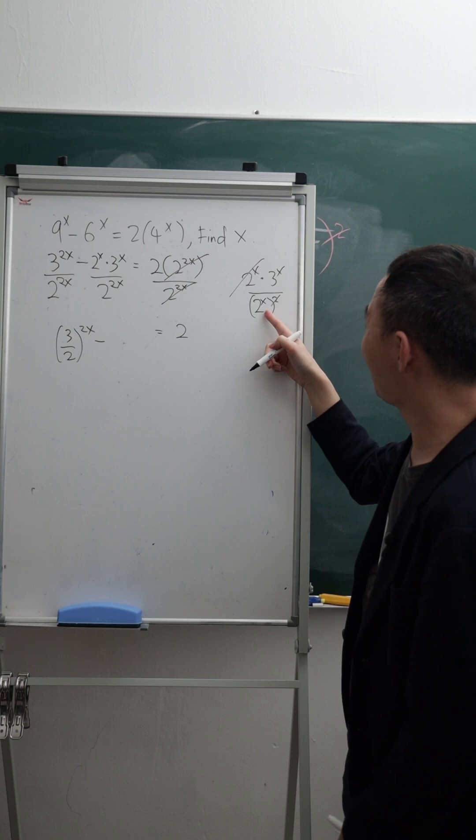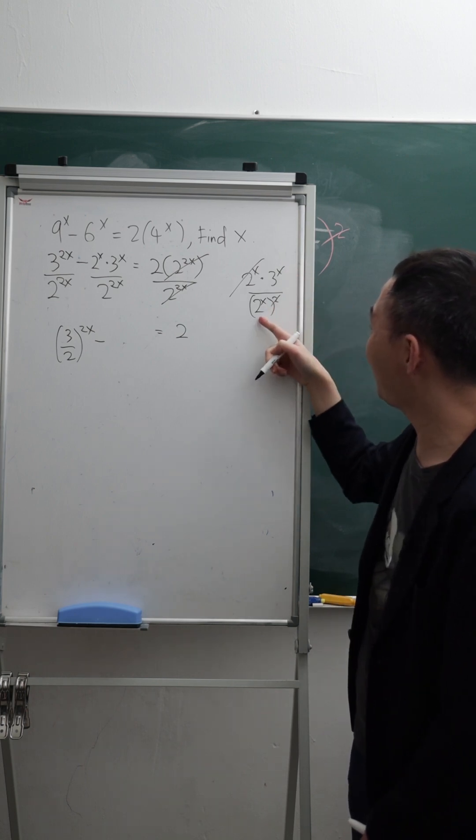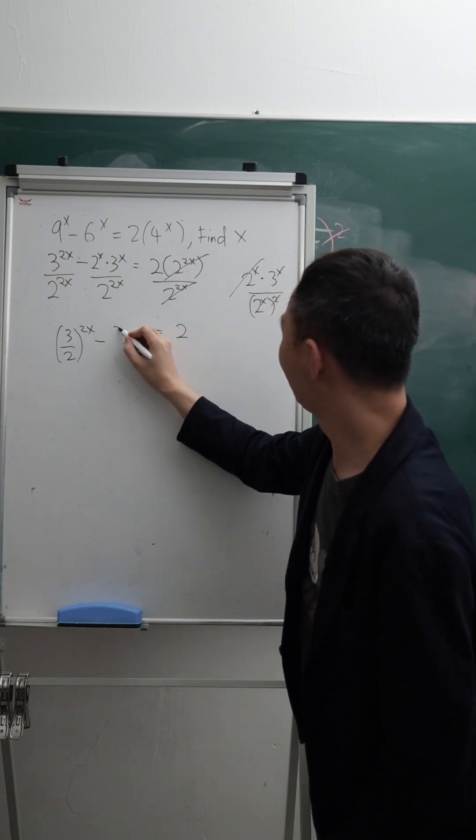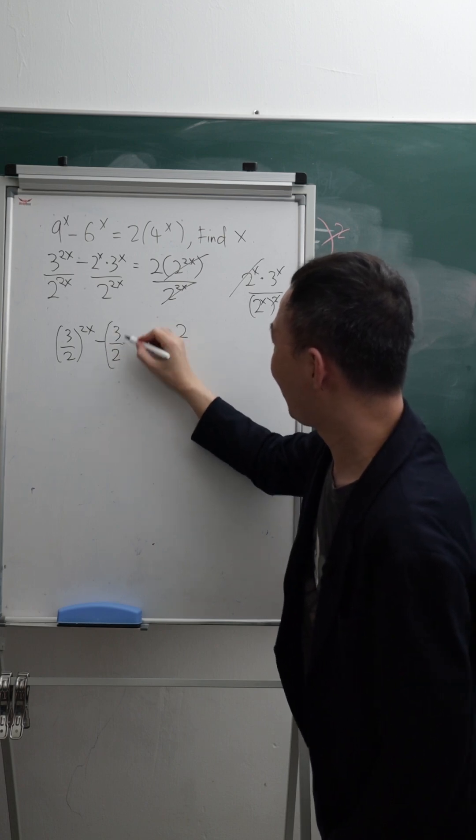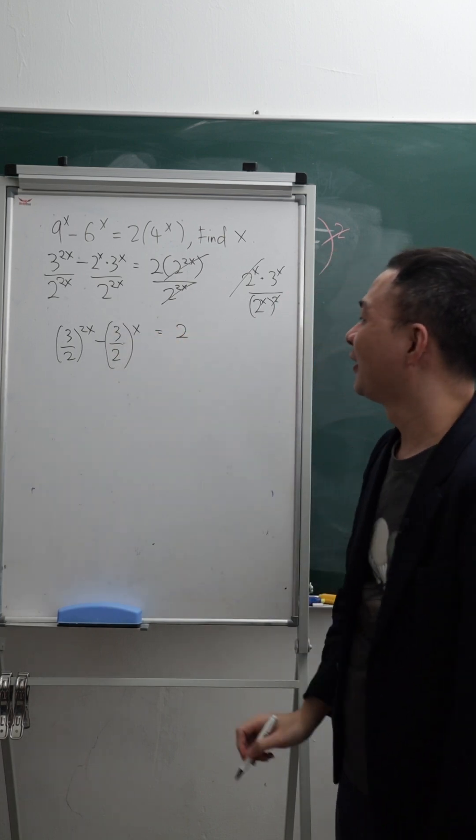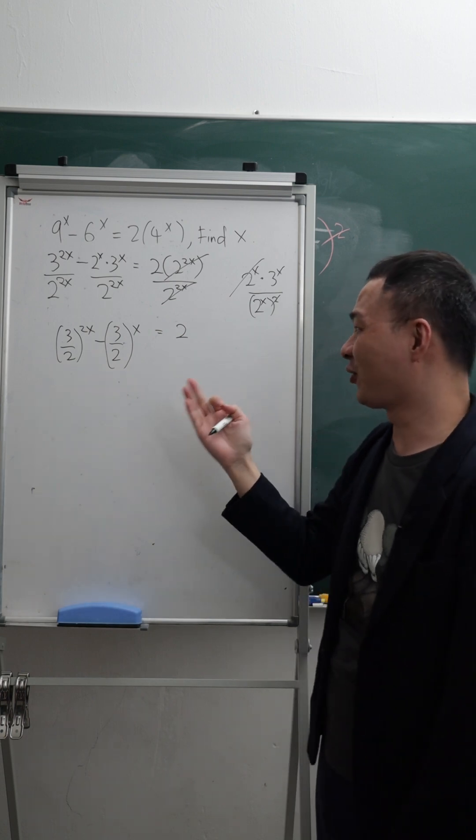So 3 power of x divided by 2 power of x, so this one will give me 3 over 2 power of x. Then you should be able to see it's a quadratic.